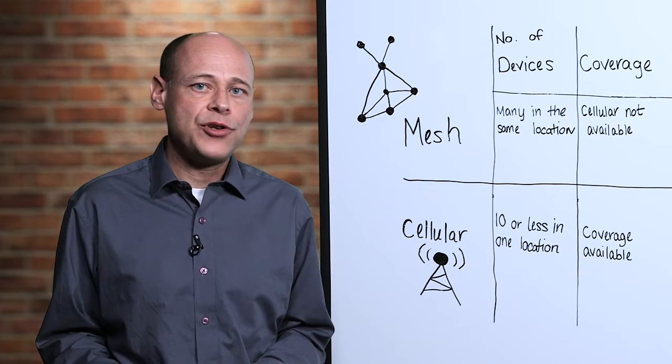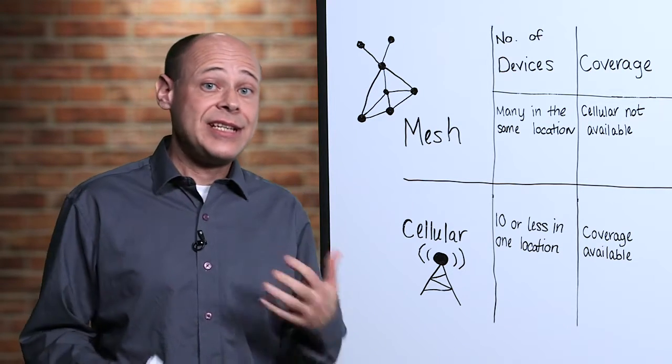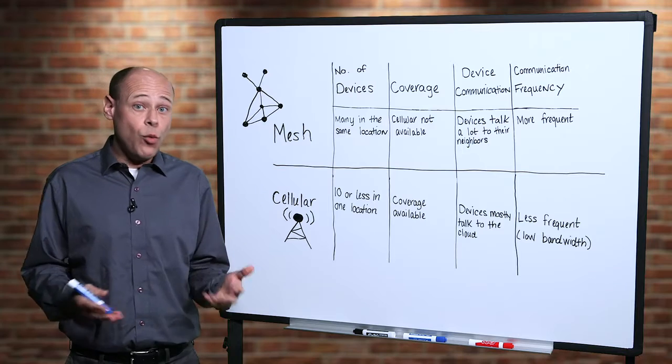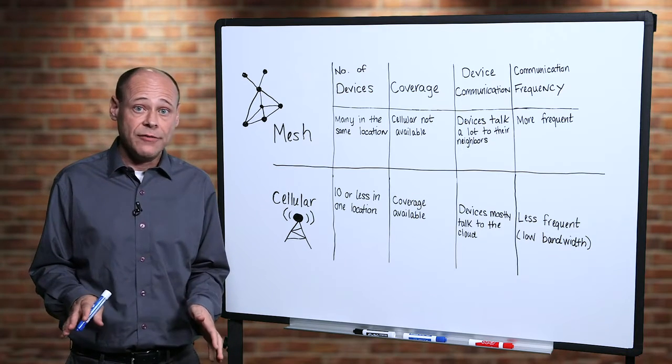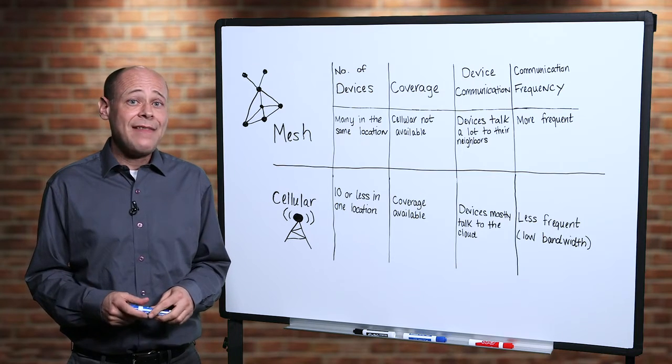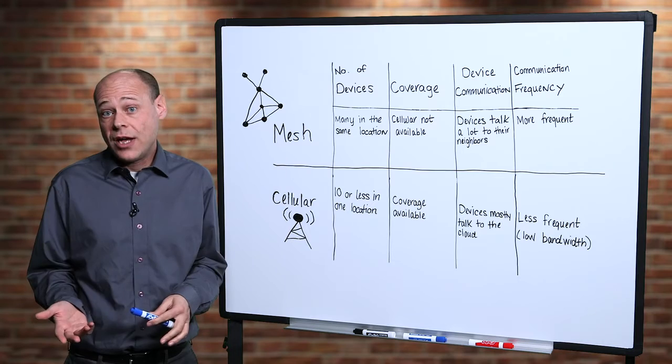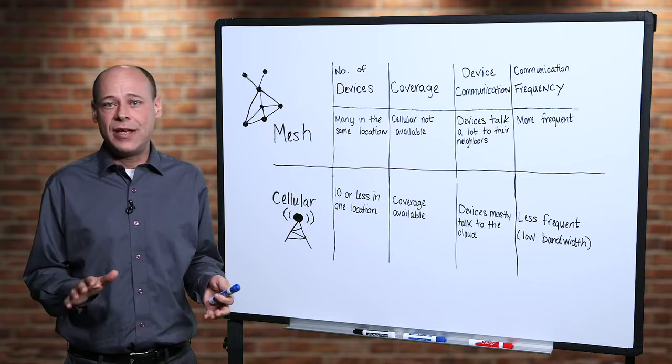Cellular is a popular choice for applications like tank monitoring. Let's say diesel fuel tanks for emergency generators. You'll want to know the current condition and fuel level of each tank. There are typically few nodes per location and they only need to communicate once in a while to state the current fuel level or to send an alarm if there's trouble.